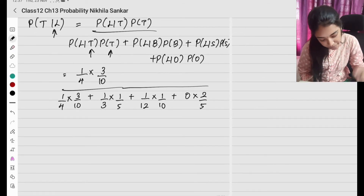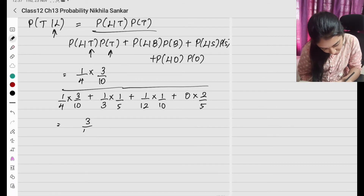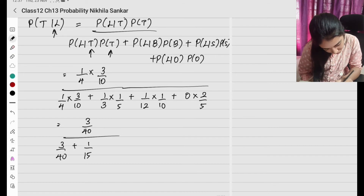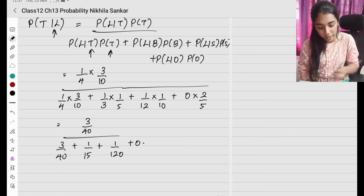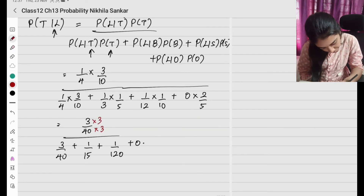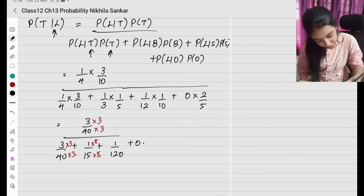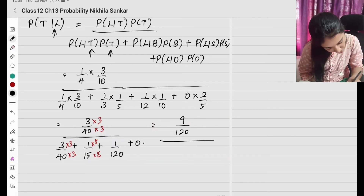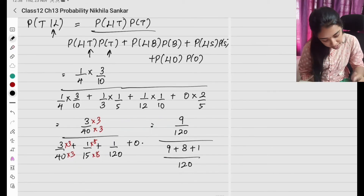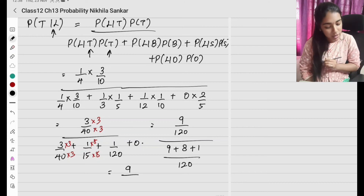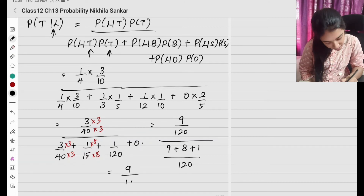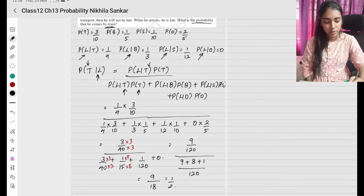Numerator is 3 by 40. Denominator: 3 by 40 plus 1 by 15 plus 1 by 120 plus 0. Taking LCM as 120, we get 9 divided by 120, plus 8 divided by 120, plus 1 divided by 120. So numerator is 9 and denominator is 9 plus 8 plus 1 equals 18. This gives 9 divided by 18, which is 1 divided by 2.